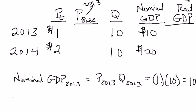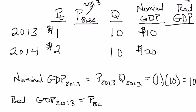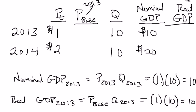Real GDP is going to be GDP calculated using prices from the base year. So real GDP in 2013 is going to be the price from the base year — which just so happens to be 2013 — times the quantity produced in 2013. That's $1 times 10, which equals $10. So real GDP in 2013 is $10. So far, nothing all that exciting.